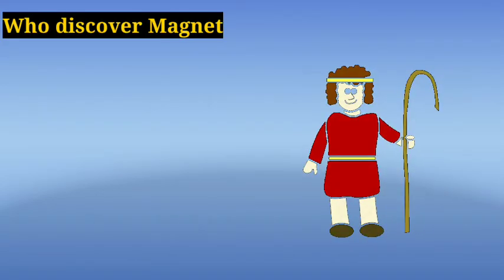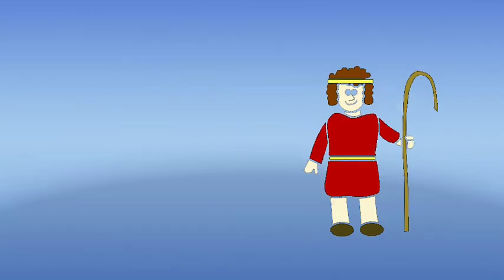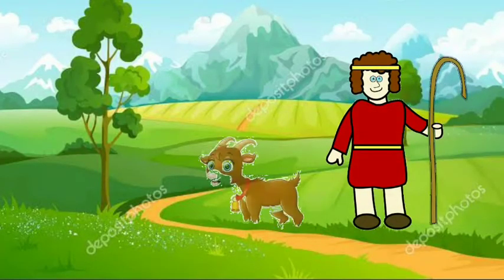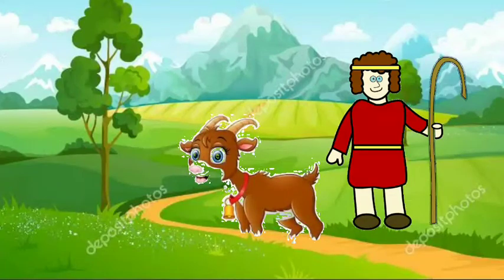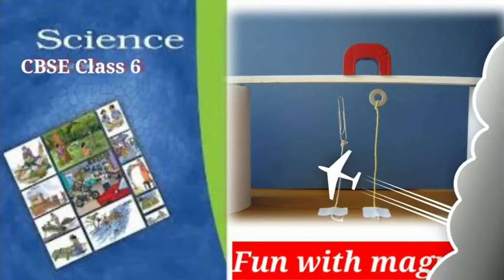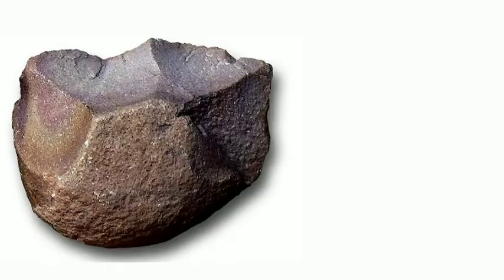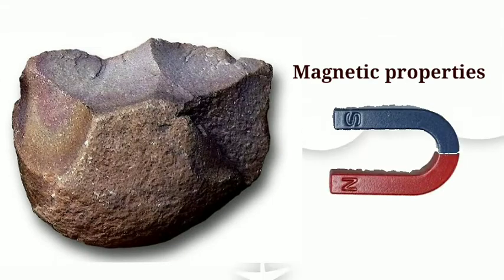Here we can see who discovered the magnet. Once upon a time there was somebody going to their farm for grazing with his goat, and his stick attached to some stone like this. He questioned why this was happening — that stone had the ability to attract some metal. That is its magnetic property.